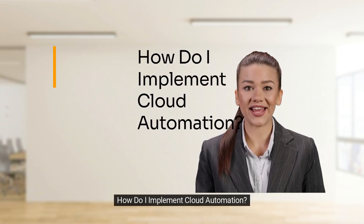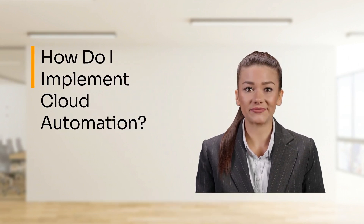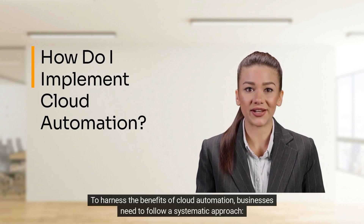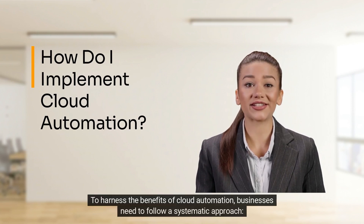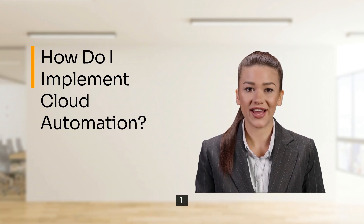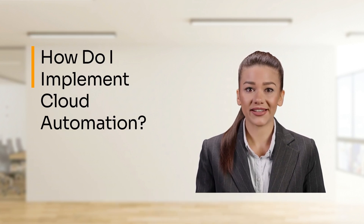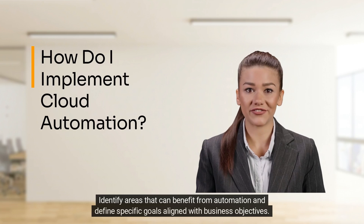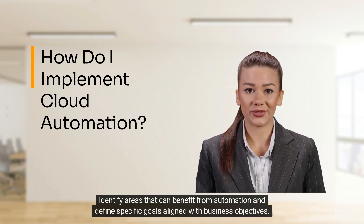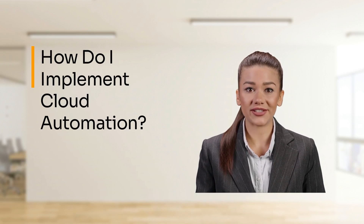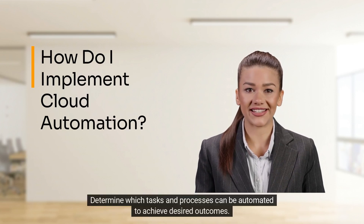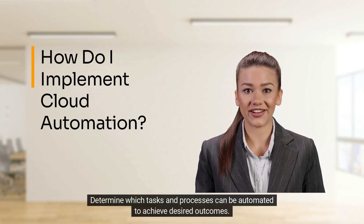How do I implement cloud automation? To harness the benefits of cloud automation, businesses need to follow a systematic approach. Step 1: Define objectives. Identify areas that can benefit from automation and define specific goals aligned with business objectives. Determine which tasks and processes can be automated to achieve desired outcomes.